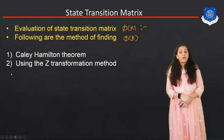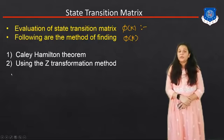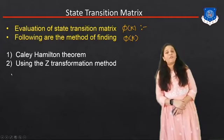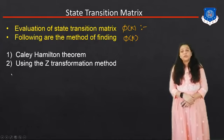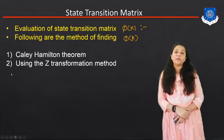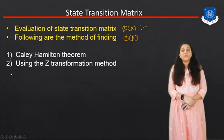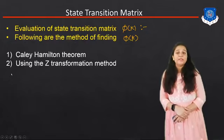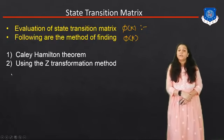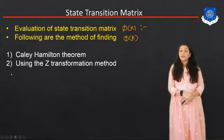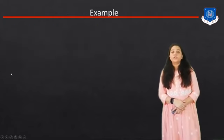First of all, how do we find the value of the State Transition Matrix? We have already studied in the last session that the following methods are used to find its value, which is known as phi of K. We can use two methods: the first is the Cayley-Hamilton method, and the second is the Z-Transformation method. Today we will study using the Z-Transformation method to find the State Transition Matrix.